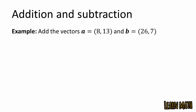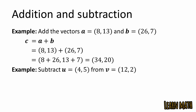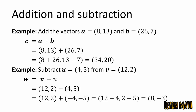Let's look at numerical examples. Vector A equals (8, 13) and vector B equals (26, 7). Let C equal A plus B: adding x and y components gives 8 plus 26 and 13 plus 7, which equals (34, 20). For subtraction: subtract U equals (4, 5) from V equals (12, 2). Let W equal V minus U: 12 minus 4 equals 8, and 2 minus 5 equals minus 3. So W equals (8, -3).